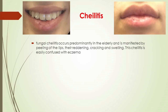Fungal cheilitis occurs predominantly in the elderly and is manifested by peeling of the lips, reddening, cracking, and swelling. Catarrhal cheilitis is manifested by inflammation of the rim of the lips and is characterized by frequent complications in the form of ulcers and inflammations, as well as desquamation and swelling of the skin. Apostematous cheilitis (purulent glandular cheilitis) affects salivary glands and proceeds most often with relapses; salivary glands are covered with erosions and growths, and lips with ulcers or infections. Penicillin cheilitis appears with the abuse of drugs containing penicillin.